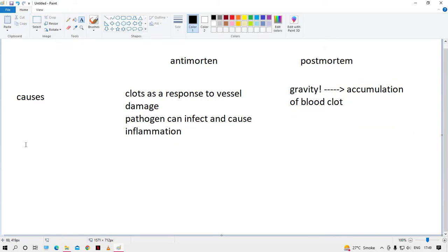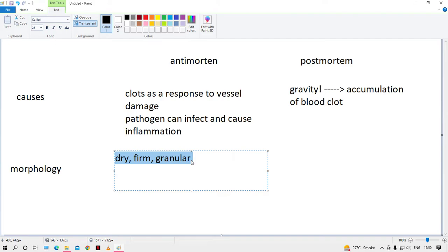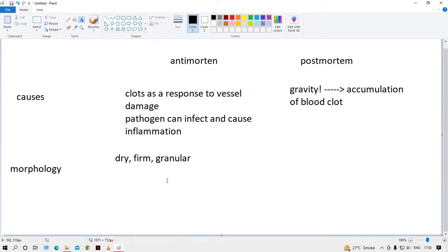Second is morphology of the clot. Antemortem clots are the normal clots in our body—maybe there's a clot in my body right now, who knows? That clot would be dry. It will be firm to touch and it will be granular. The clots are supposed to be dry because they have to protect the underlying structure.